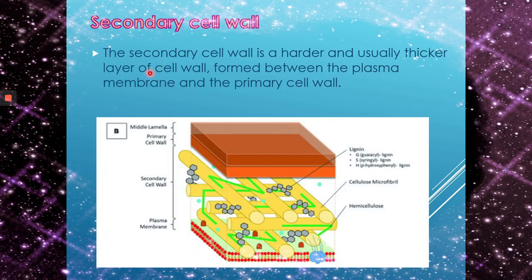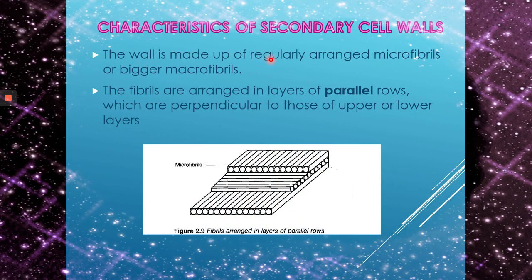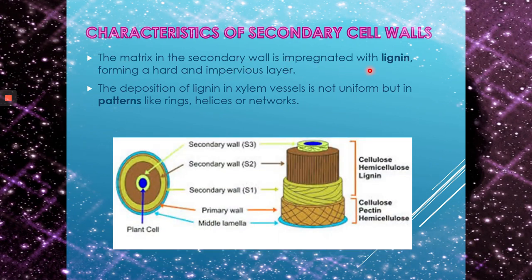The secondary cell wall is a harder and usually thicker layer that forms between the plasma membrane and the primary cell wall. It is made up of regularly arranged microfibrils with fibrils arranged in layers of parallel rows perpendicular to those of the layers above and below. The matrix in the secondary wall is impregnated with lignin, forming a hard and impervious layer. The deposition of lignin in xylem vessels is not uniform but forms patterns like rings, helicals, or networks.